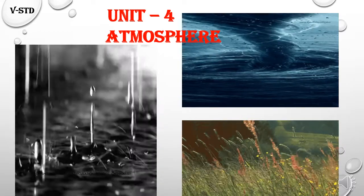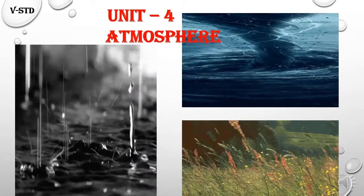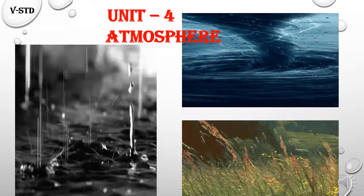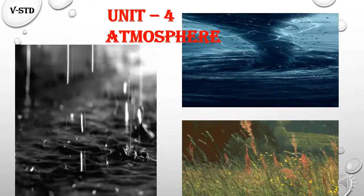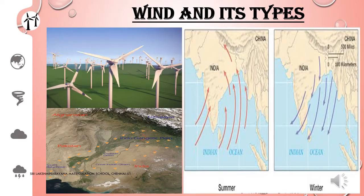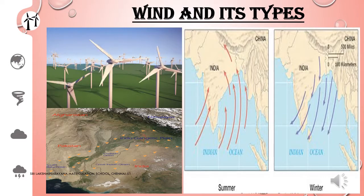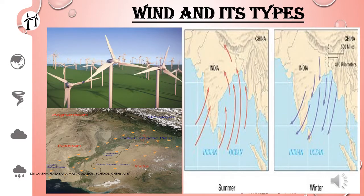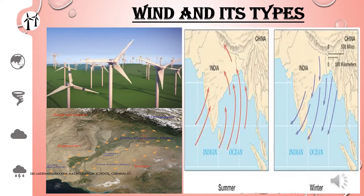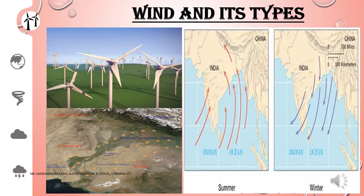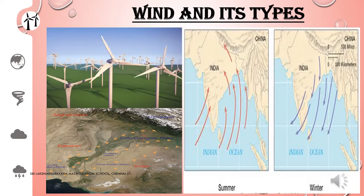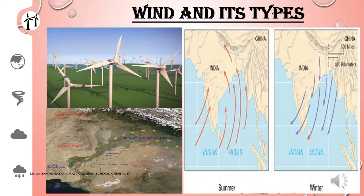This will be the continuation of Unit 4, Atmosphere. Wind energy is a form of renewable energy. Wind turbines convert the kinetic energy into mechanical energy. A generator can convert mechanical energy into electrical energy.